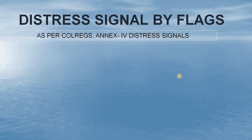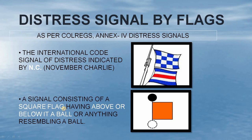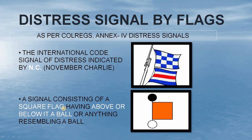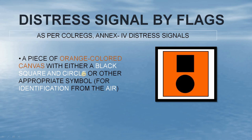Next up we have distress signals by flags. As per COLREG Annex 4 distress signals, there are three flags that can be used as a distress signal. First, the combination of the November flag followed by the Charlie flag in a vertical line — the international code signal of distress indicated by November Charlie. Second, a signal consisting of a square flag with a ball, or anything resembling a ball, above or below it. Third, a piece of orange colored canvas with either a black square and a circle, or some appropriate symbol — used as an identification means from the air.